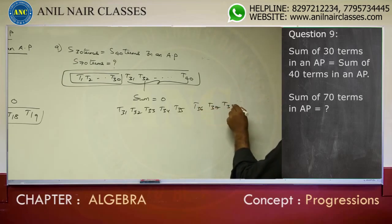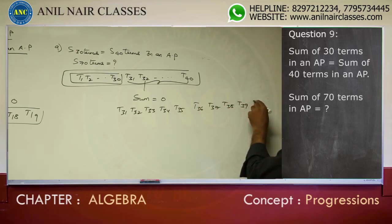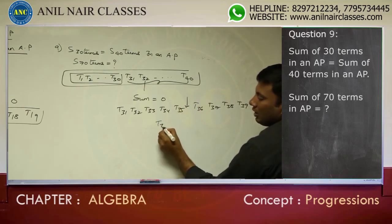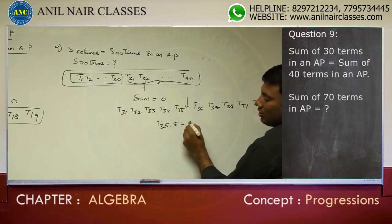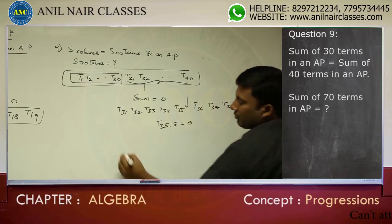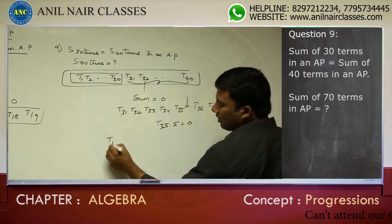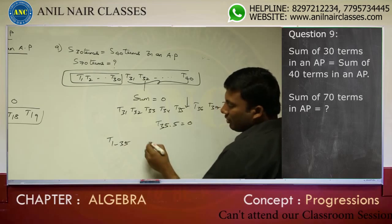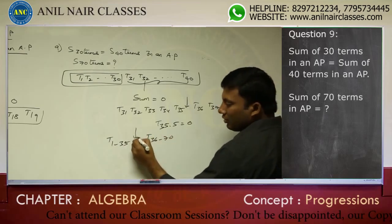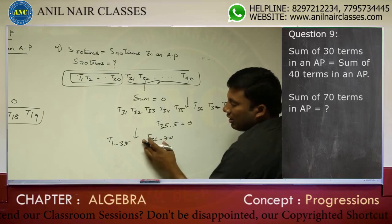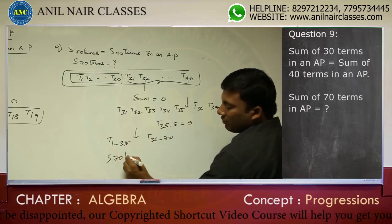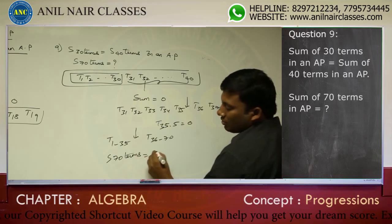The terms T37, T38, T39, T40 are listed. The middle value of the last 10 terms is 35.5, so T35.5 = 0. The question asks for the sum of 70 terms. Sum of 70 means 35 terms to the left and 35 to the right. The middle value is 35.5, and since 35.5 is 0, the sum of 70 terms is also 0.